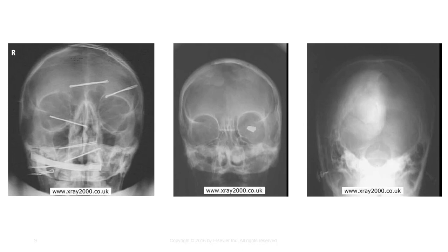The image on the left has several bobby pins and a hair clip. In the middle, this eye prosthetic could have been removed. On the right, we see earrings and a density artifact from a hair bun.